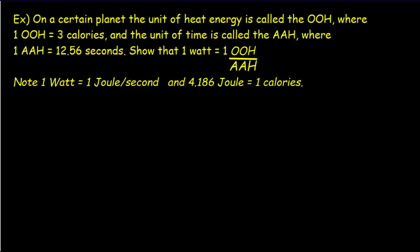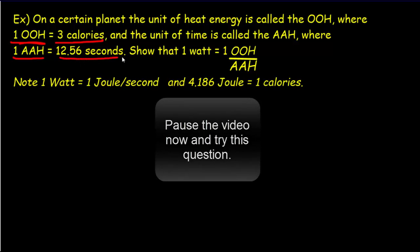Here's a second example involving an alien planet. On that planet, the unit for energy is the oo — one oo equals 3 calories. One of the time units is the ah, equal to 12.56 seconds. We're asked to show that one watt is equal to one oo per ah.